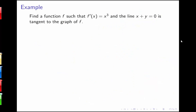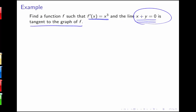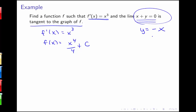In this next example we're doing something a little different. We've got information given not as a point, but in terms of a tangent line. We want to find a function f such that f prime of x equals x cubed — that gives us the general form of f. We're also told that the line x plus y equals 0 is tangent to the graph of f. If f prime of x equals x cubed, then f of x must be x to the 4th over 4 plus c.